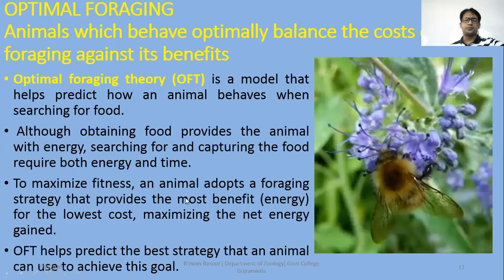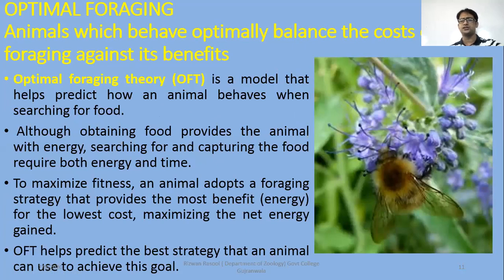The optimal foraging theory is a model that helps predict how an animal behaves when searching for food. Although obtaining food provides the animal with energy, searching and capturing also consume energy. When the energy consumed equals the energy gained, fitness is maximized. Otherwise, if energy loss exceeds energy gained, the animal will not be able to survive.